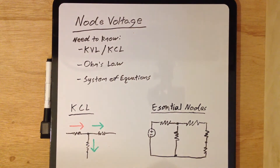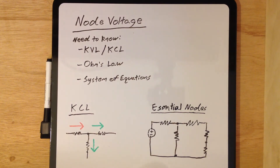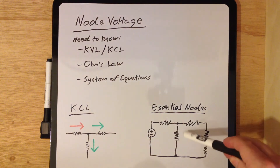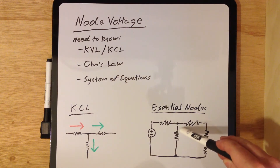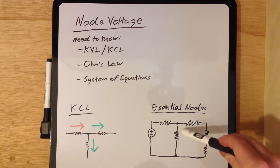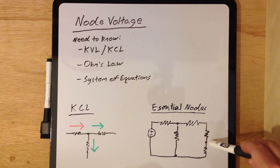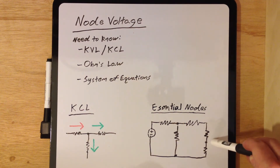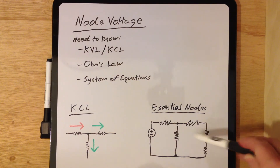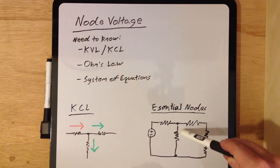The next point you'll need to remember is essential nodes. Essential nodes are nodes that have 3 or more branches coming into them. For example, this node here has 3 branches, making it an essential node. But this other node only has 2 branches, so it is not an essential node.